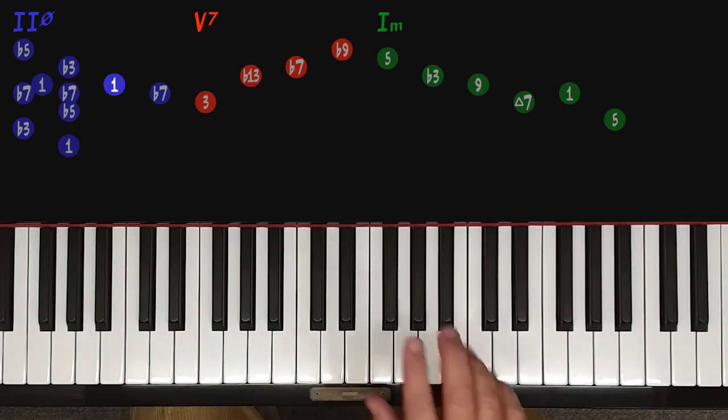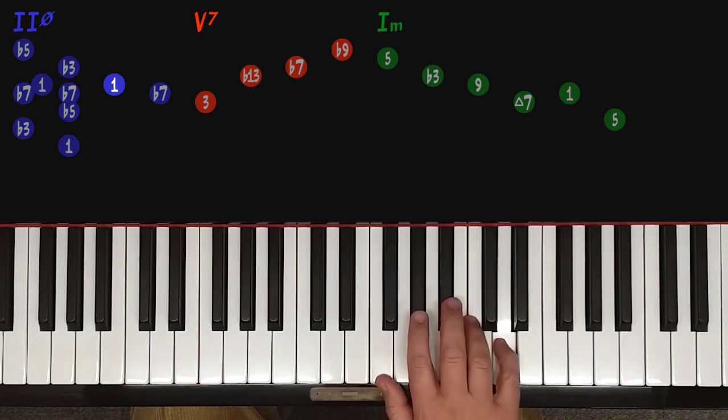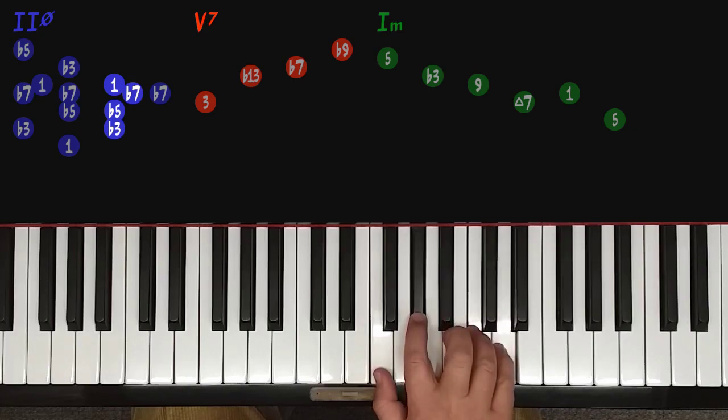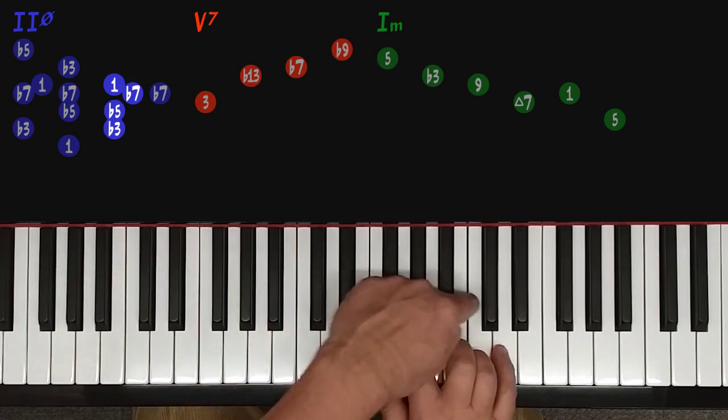Next, the root D. The same procedure again: the minor 7th C, the flat fifth Ab, the minor 3rd F. Close position, drop 2.